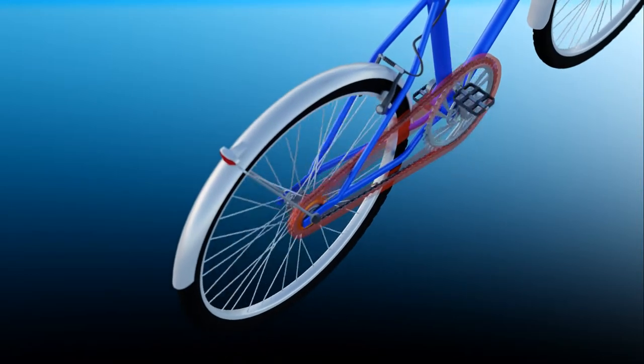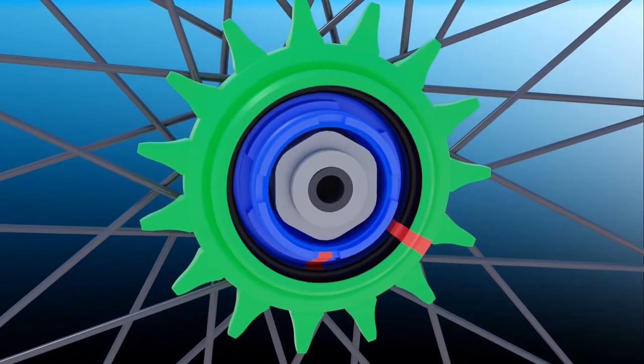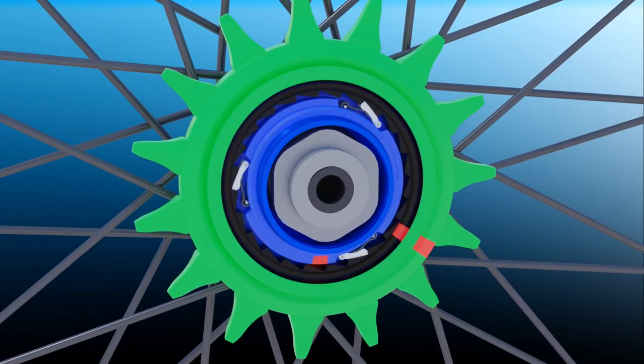Well, this wheel sprocket is not a simple bearing, it's a one-way clutch bearing. The secret lies inside the sprocket.